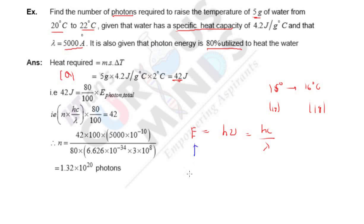So E of n photons is nothing but n times hc by lambda. You can see here n times hc by lambda times 80% as it was utilized.